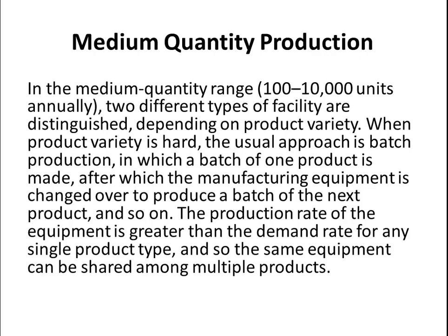Now let's go to the second one: medium quantity production. It is more than low quantity production — here 100 to 10,000 units are produced per year. In the medium quantity range, two different types of facilities are distinguished depending on product variety.